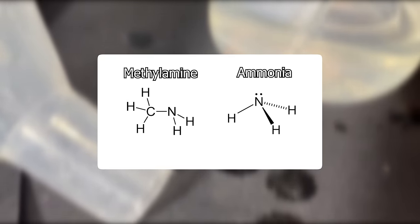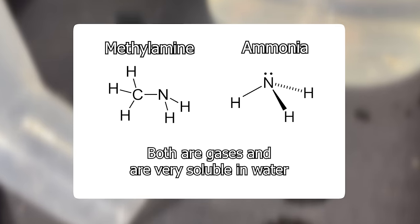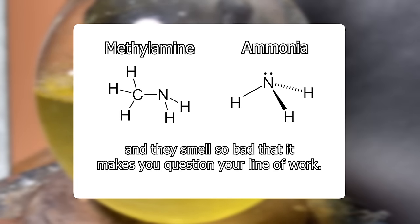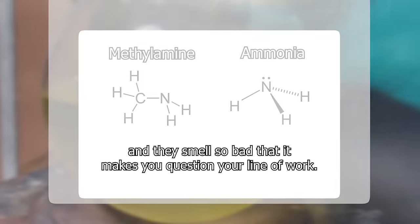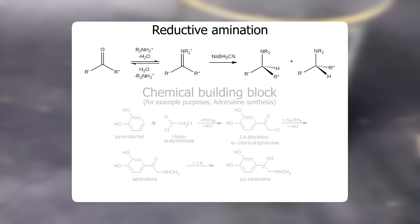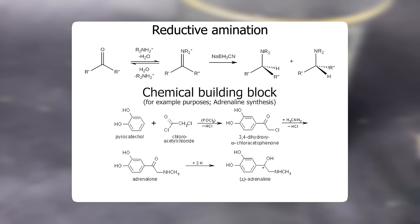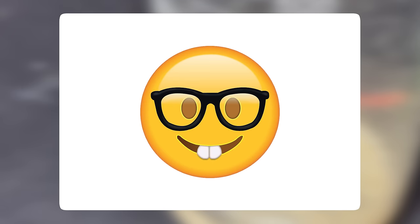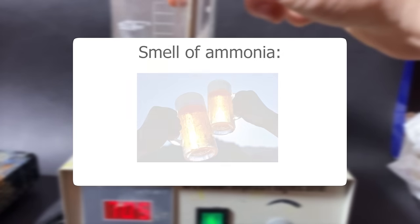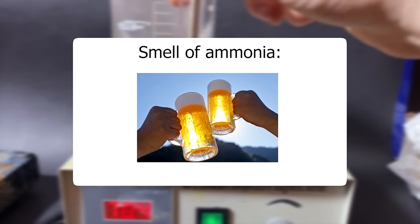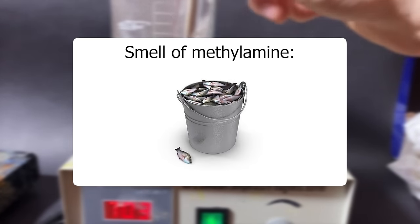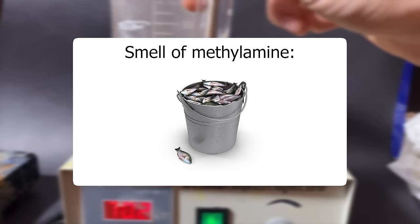Methylamine is extremely similar to ammonia, which means it's a gas with an extremely high solubility in water. And just like ammonia, it has an extremely foul smell. In terms of chemistry, methylamine is used in many interesting reactions like reduction reactions, or just as a chemical building block. It's basically an extremely handy compound to have in an organic lab. In contrast to ammonia's irritating smell comparable to decomposing piss, methylamine has an extremely foul smell similar to that of rotting fish.